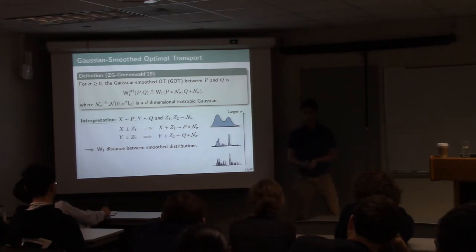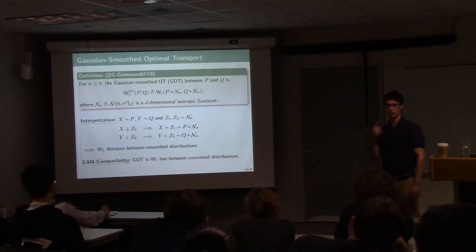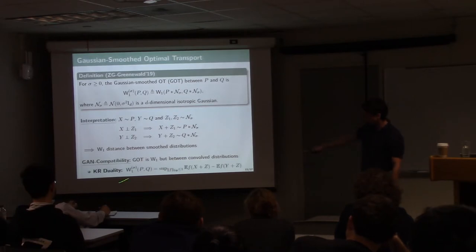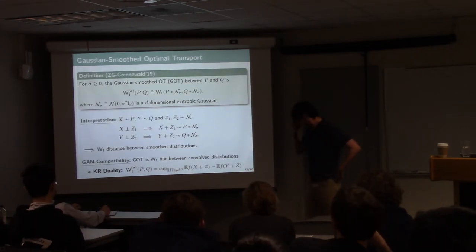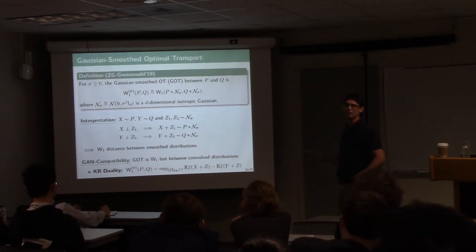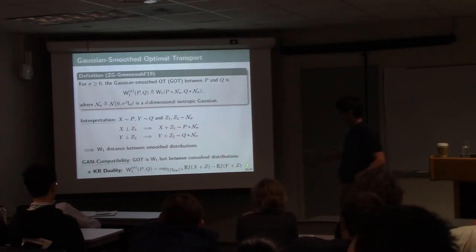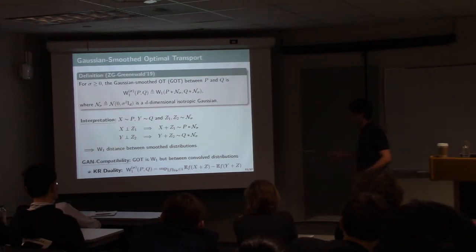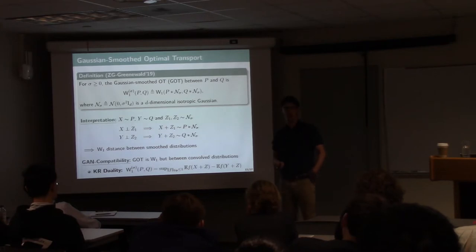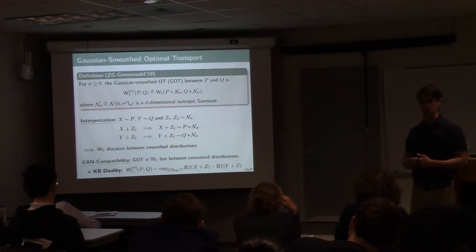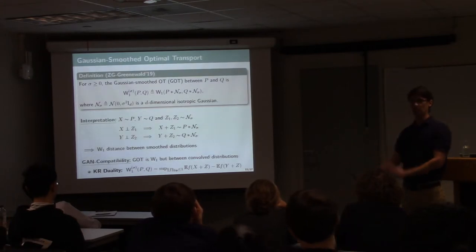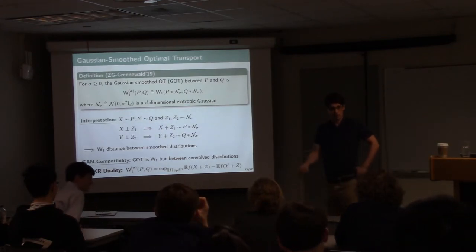The first nice thing about GOT is that it doesn't lose compatibility with GANs — because it's regular W_1 between perturbed distributions, you can apply Kantorovich-Rubinstein duality and get a supremum-Lipschitz-1 function in dual form. The only difference is that now you add Gaussian perturbations to your real and fake samples, which means any GAN implementation out there adapted for regular W_1 can be trivially modified to accommodate GOT instead. There's much structure here to be exploited, but at the very least everything already implemented can be pulled into this framework. So you don't lose this compatibility with GANs — which is nice.